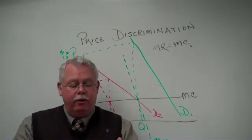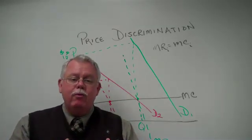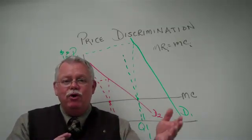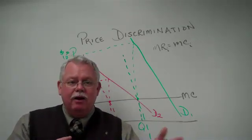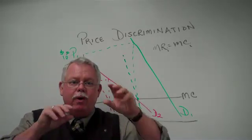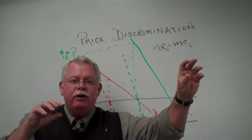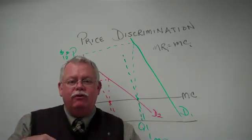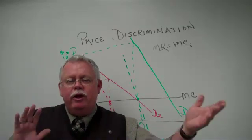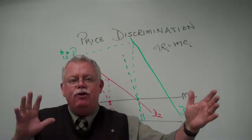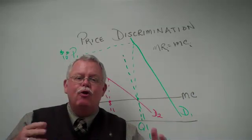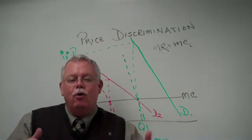Just quickly in passing: second-degree price discrimination typically says when you buy certain quantities you get one price, but if you buy in larger quantities you get a lower price. So you're trying to take the heavy users or people who buy a lot of your product and encourage them with a lower price.